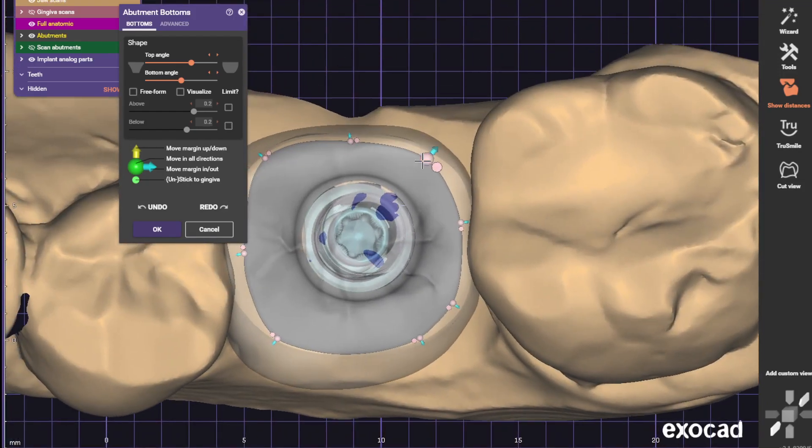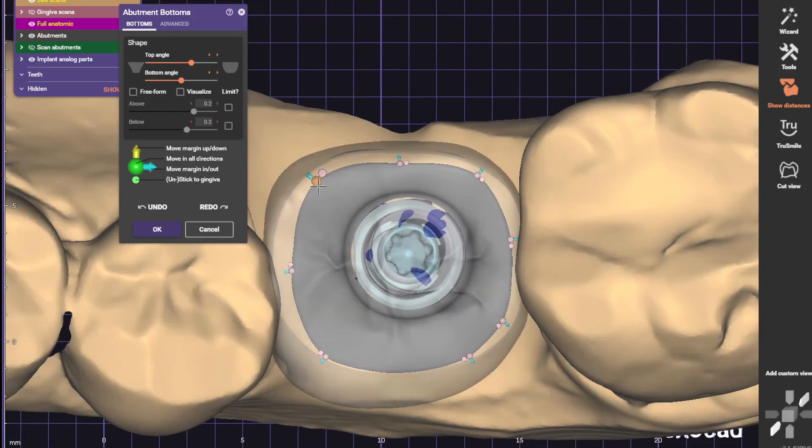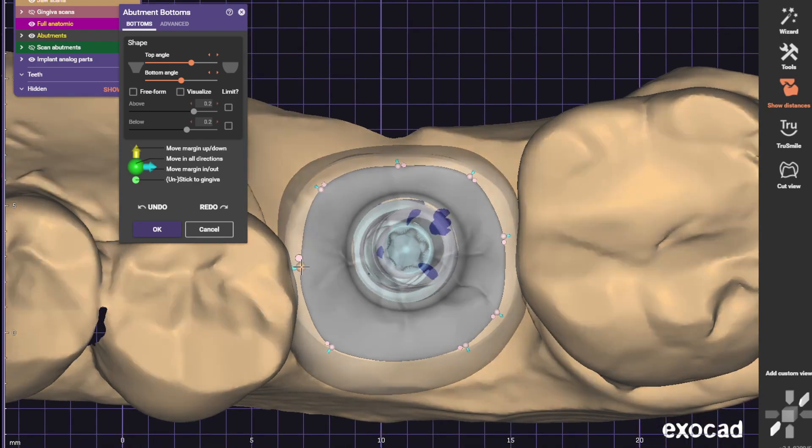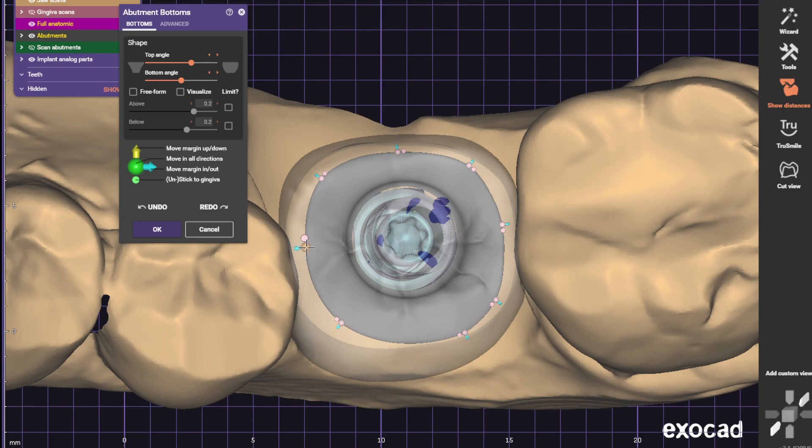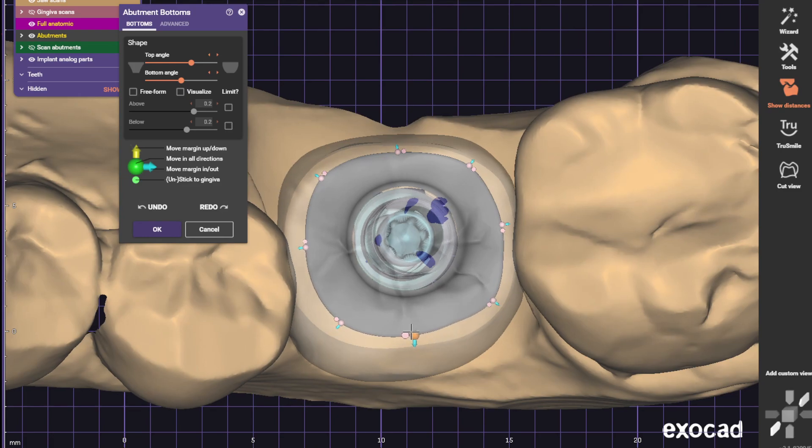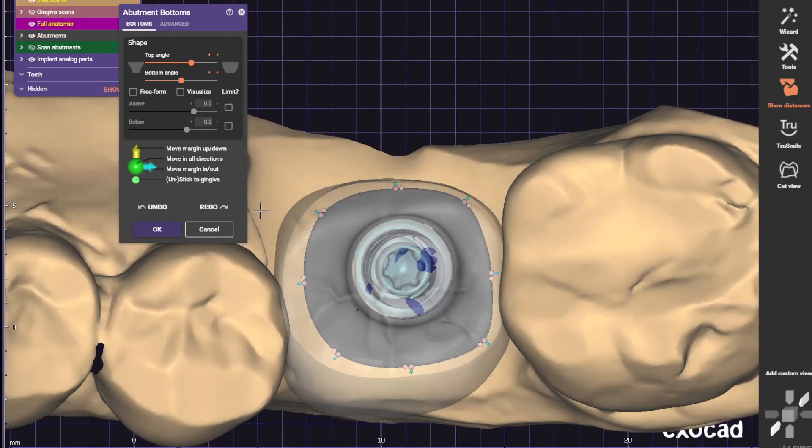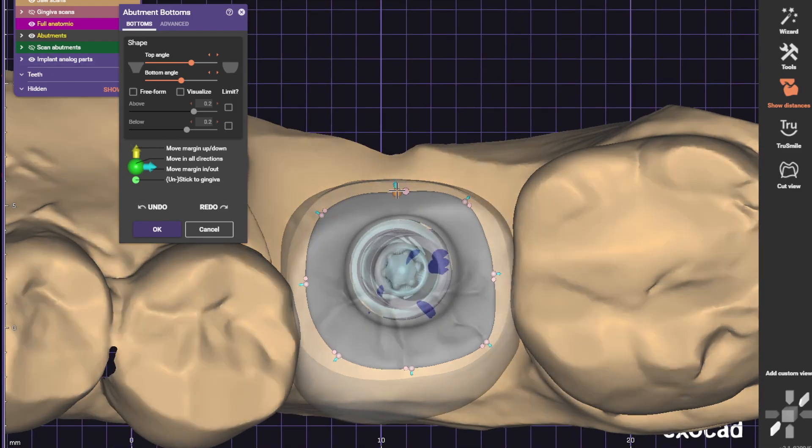Alright, we want to keep these as square-shaped as possible. We want to follow that shape of the tooth like this, okay? And let's make sure that margin isn't underneath the contact area, otherwise they'll never be able to set this crown.